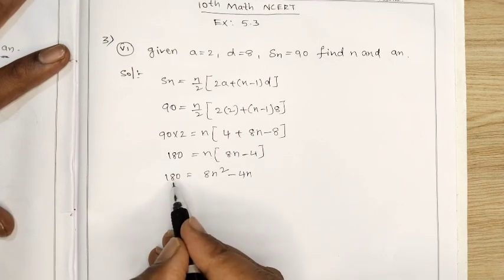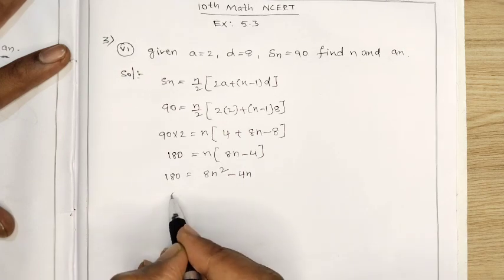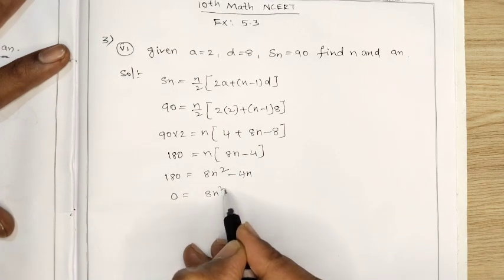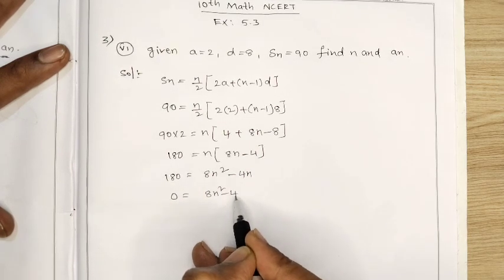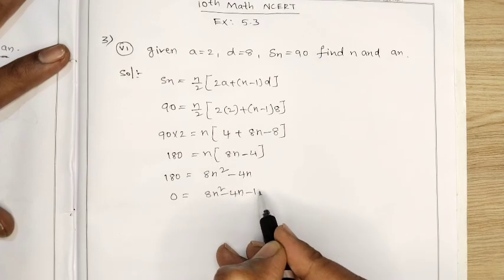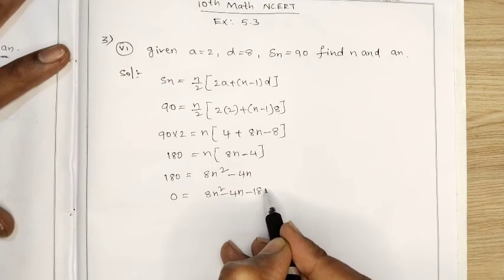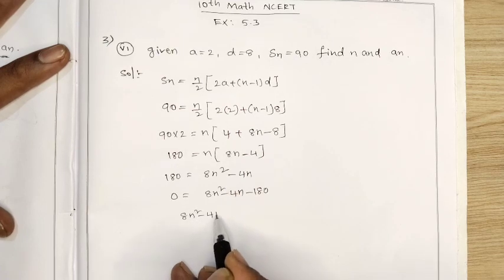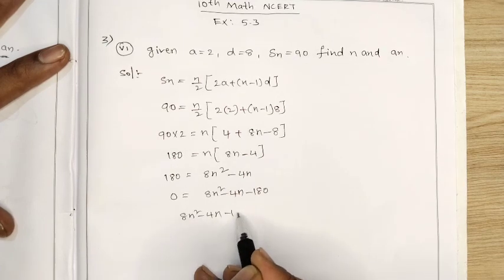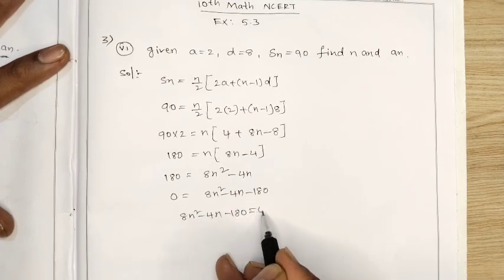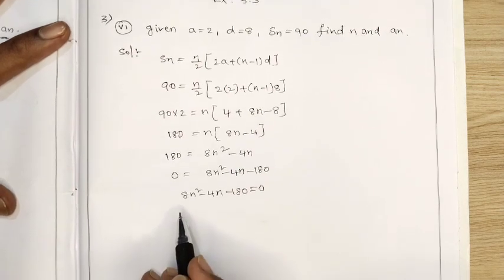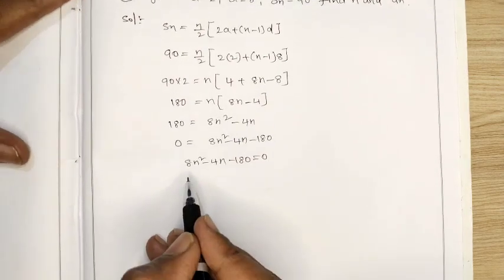I will take 180 to this side, so 0 equal 8n squared minus 4n minus 180, which means 8n squared minus 4n minus 180 equal 0.